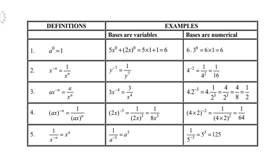Definition 4: when both a and x carry the power negative n, both terms go to the denominator — 1 over ax to the power positive n. For example, 2x to the power negative 3: both terms go down, giving 1 over 2x to the power 3, which equals 1 over 8x cubed. And 4 times 2 to the power negative 2: both go down, giving 1 over 64.